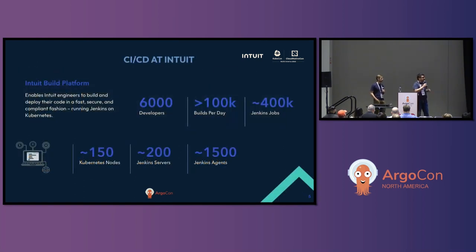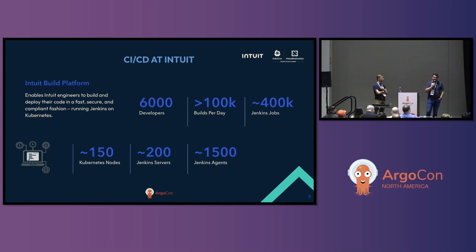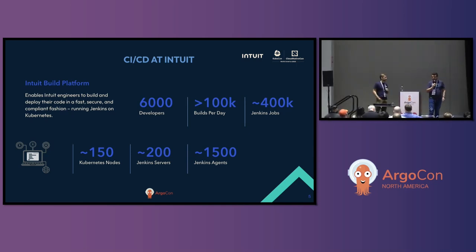Let's have a closer look at CI/CD at Intuit. We are currently running Jenkins on top of Kubernetes at scale. For Intuit, that means about 6,000 developers running 100,000 jobs daily. In order to support this, we are running a Kubernetes cluster with about 150 nodes, on which are 200 Jenkins controllers. We're ranging between 1,000 to 1,500 build agents at a given point in time to run those builds.